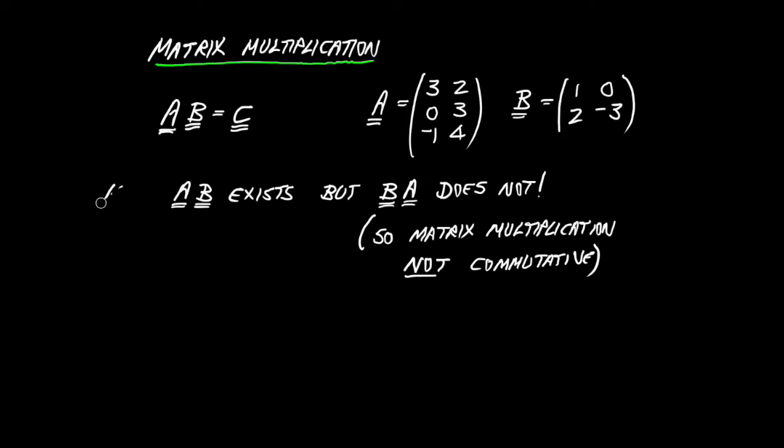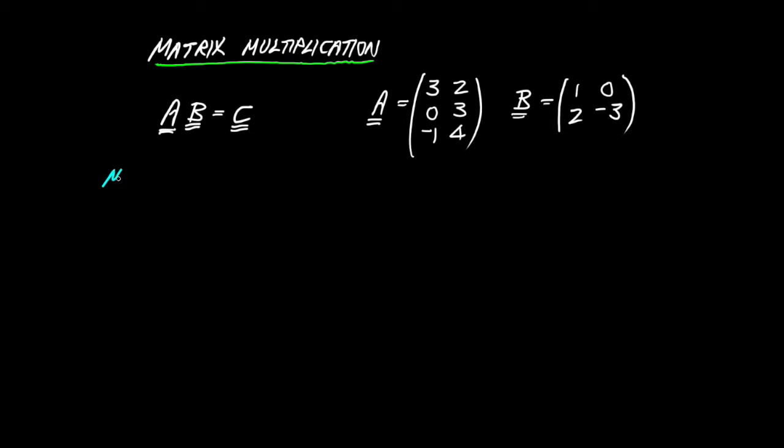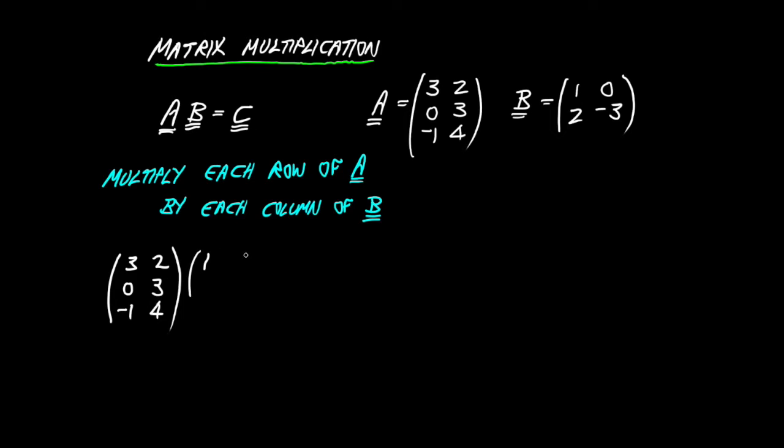So let's go ahead and see how the multiplication actually works. The trick is to multiply each row of matrix A, the first matrix, by each entire column of matrix B. Let's write out our example. Three, two, zero, three, minus four, minus one, minus one, four. One, zero, two, minus three. Now I know that this guy is going to have three rows and two columns, the output matrix. You'll see why in a bit. I'll just put these blanks in for now.